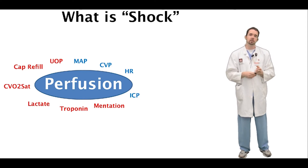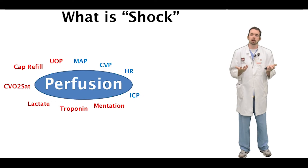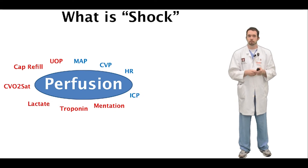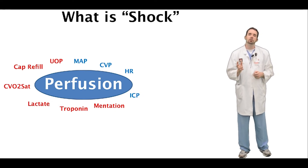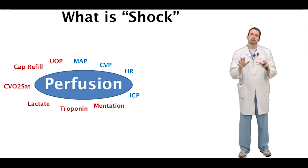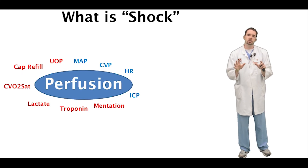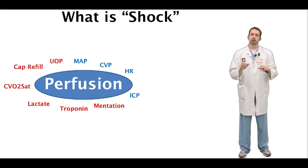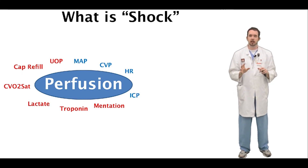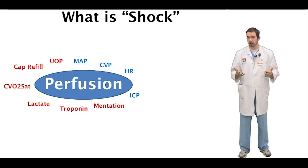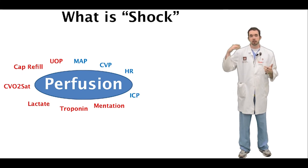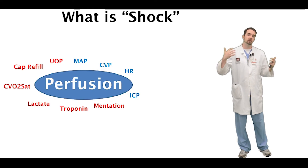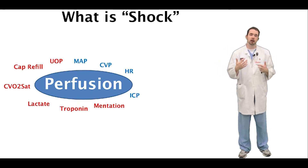A normal CVP is typically around one to five. After we've assessed and recognized shock, it's important that we categorize the type of shock the patient has. As shown here, there are a lot of different categories of shock.